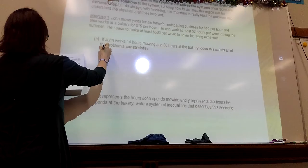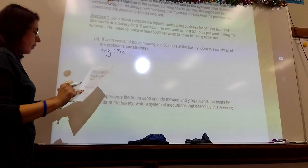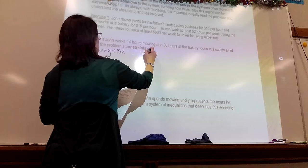X represents the hours mowing. So, I'm going to write it up here because I'm going to have to push this up anyway. Mowing plus bakery hours alone has to be less than or equal to 52. He can't work any more than 52 hours.